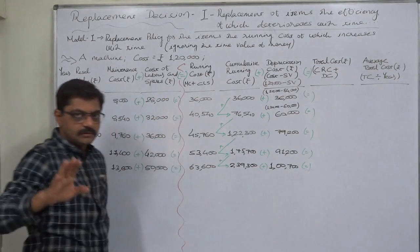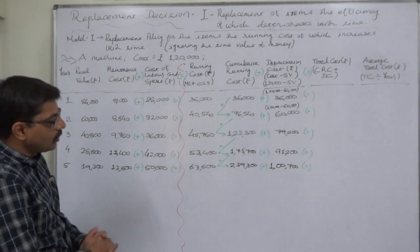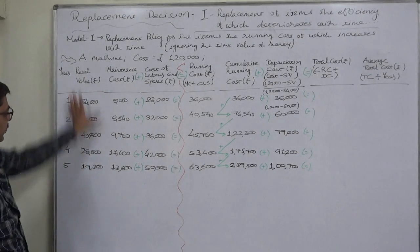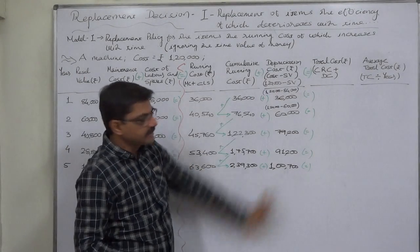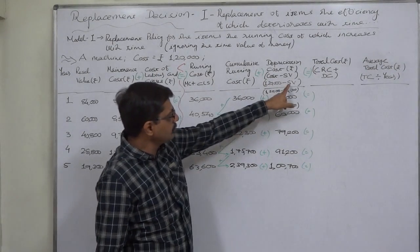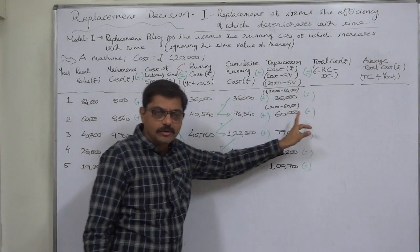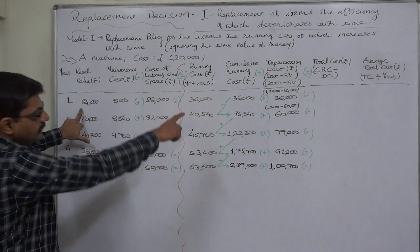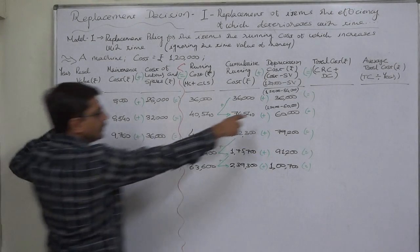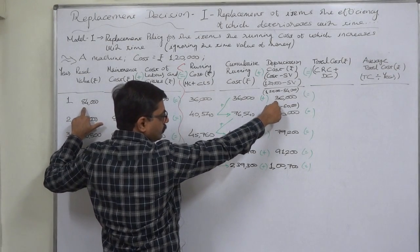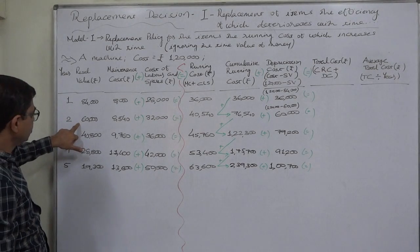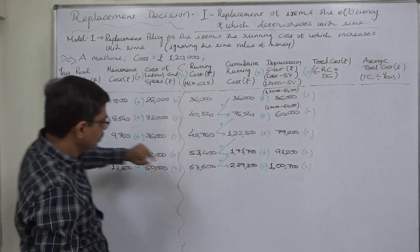In this particular case, the depreciation cost is not constant as in the previous case, because the resale value changes every year. The original cost minus the resale value gives the depreciation cost. One lakh twenty thousand minus resale value at the end of year one (eighty-four thousand) gives depreciation of rupees thirty-six thousand. For year two: one lakh twenty thousand minus sixty thousand gives depreciation of sixty thousand.